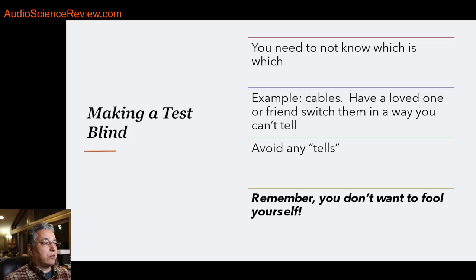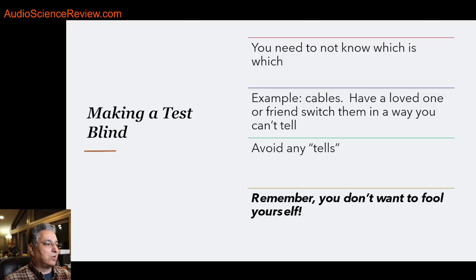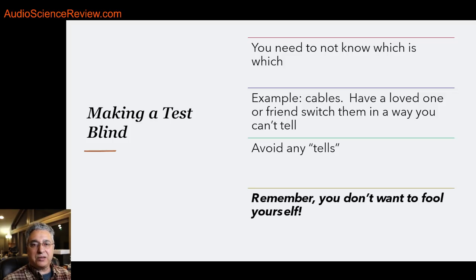We need to make a test blind — the key thing is not knowing which device is which. One way is to use an electronic AB switcher where you don't know which one is A and which is B. Have somebody else come and connect the cables, then flip A and B. A lot of people say they don't want a switch in the signal path that could add distortion. Fine — have someone in your household or a friend switch the cables while you turn your back.